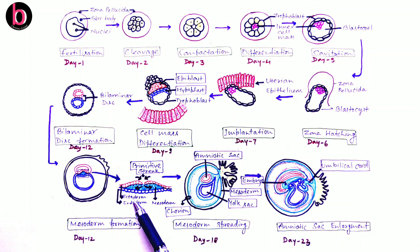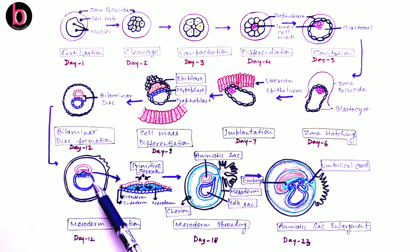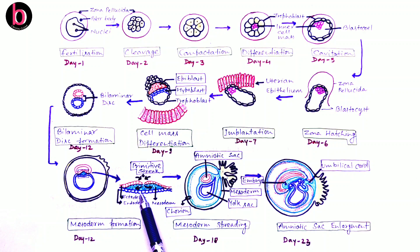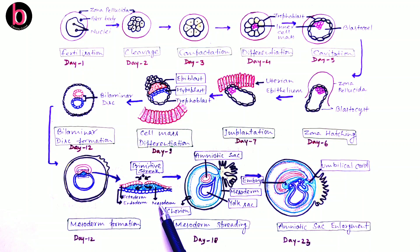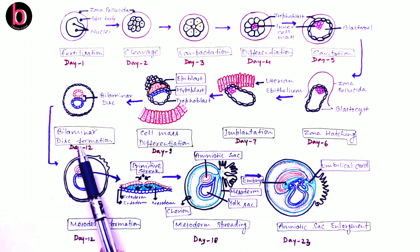All three layers — ectoderm, endoderm, and mesoderm — are developed from the epiblast. The hypoblast is later degenerated. The lowermost cells of the epiblast after invagination form the endoderm, the uppermost layer remains as ectoderm, and the middle region forms the mesoderm. In embryonic development, ectoderm and endoderm develop first, and mesoderm develops after the bilaminar disc-like structure is formed.